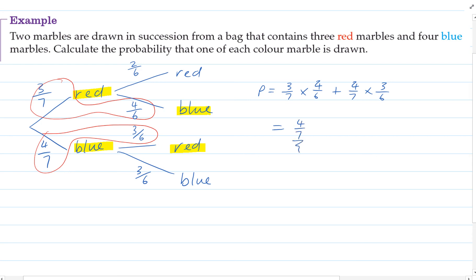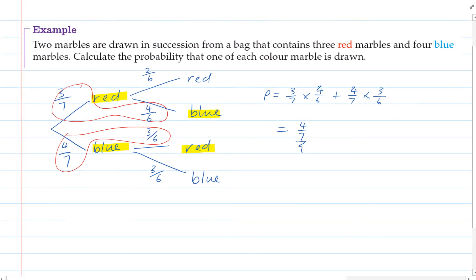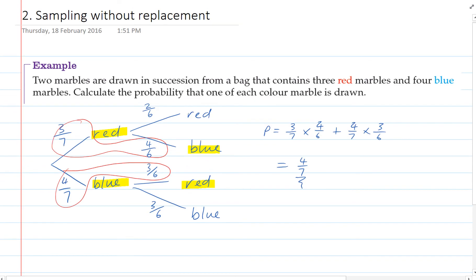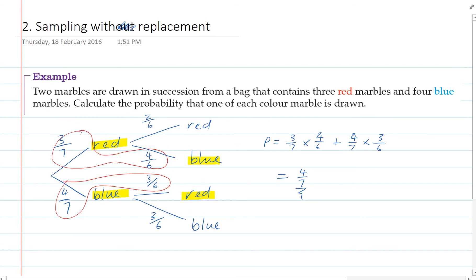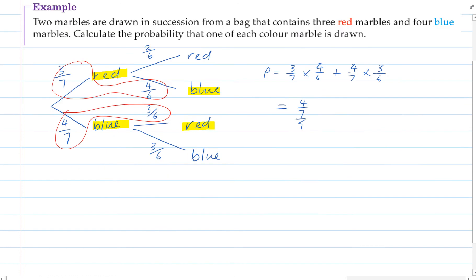And that's our answer. So when we're doing probability without replacement, we should remember that we need to adjust the probabilities, because as something is taken out, it changes the probabilities from there on in.